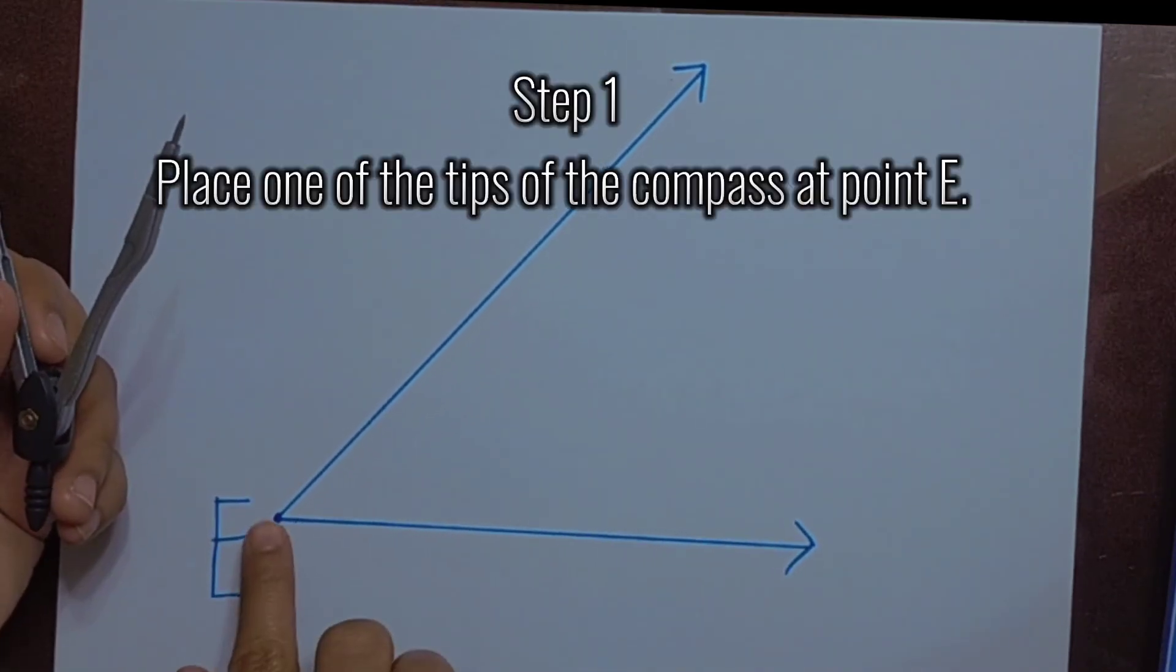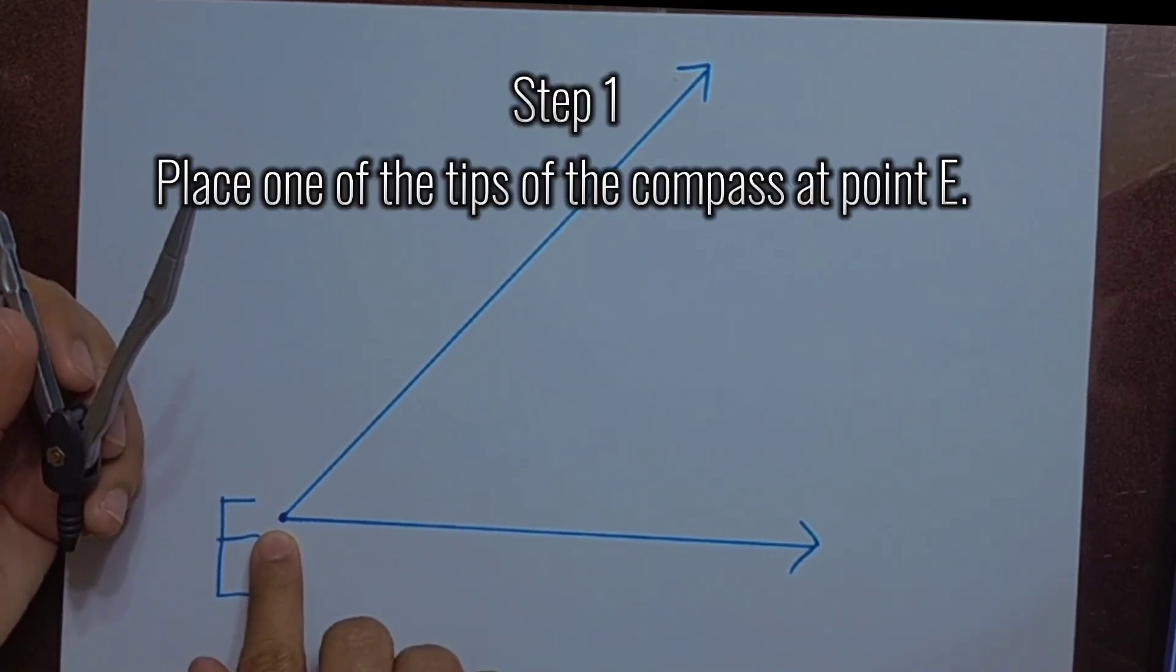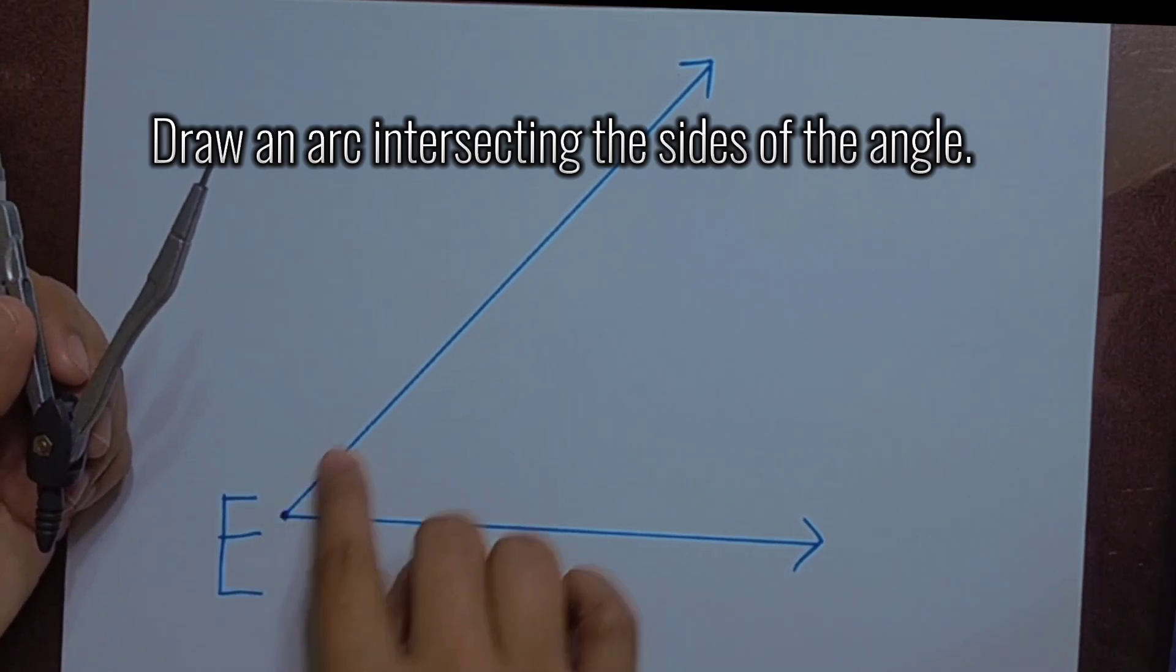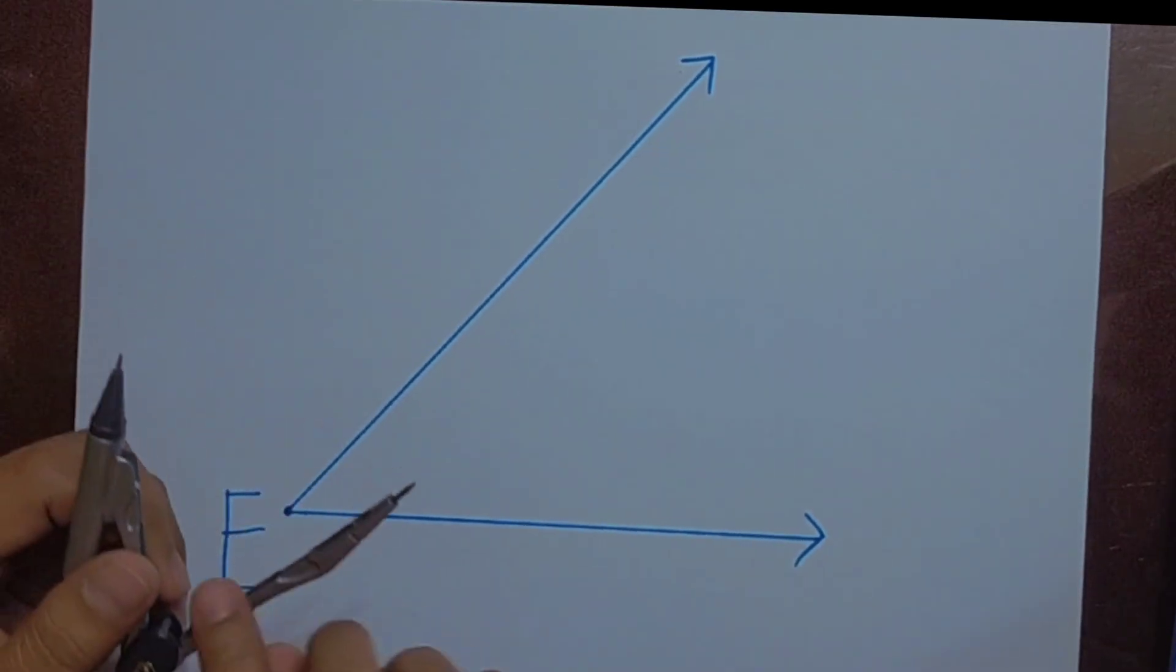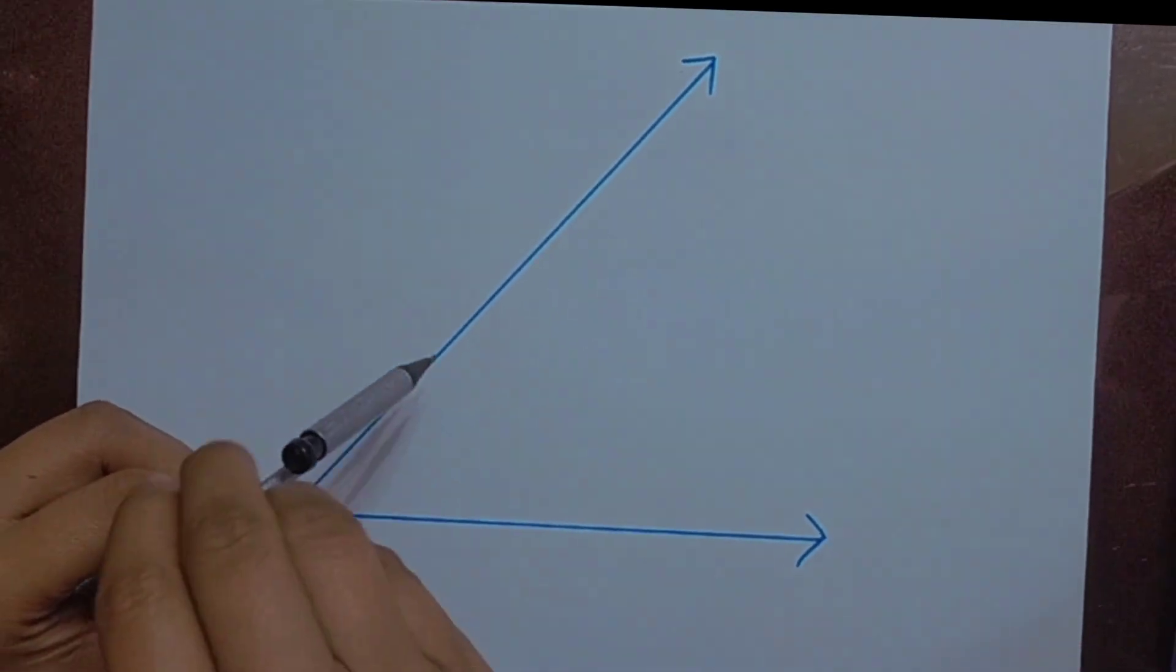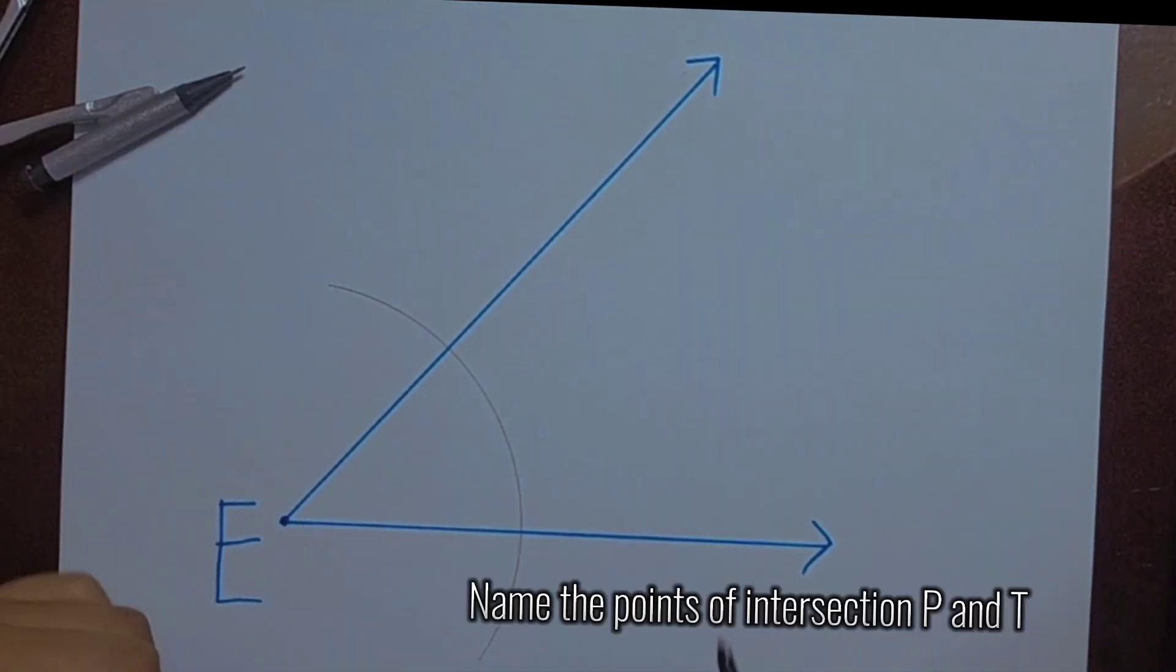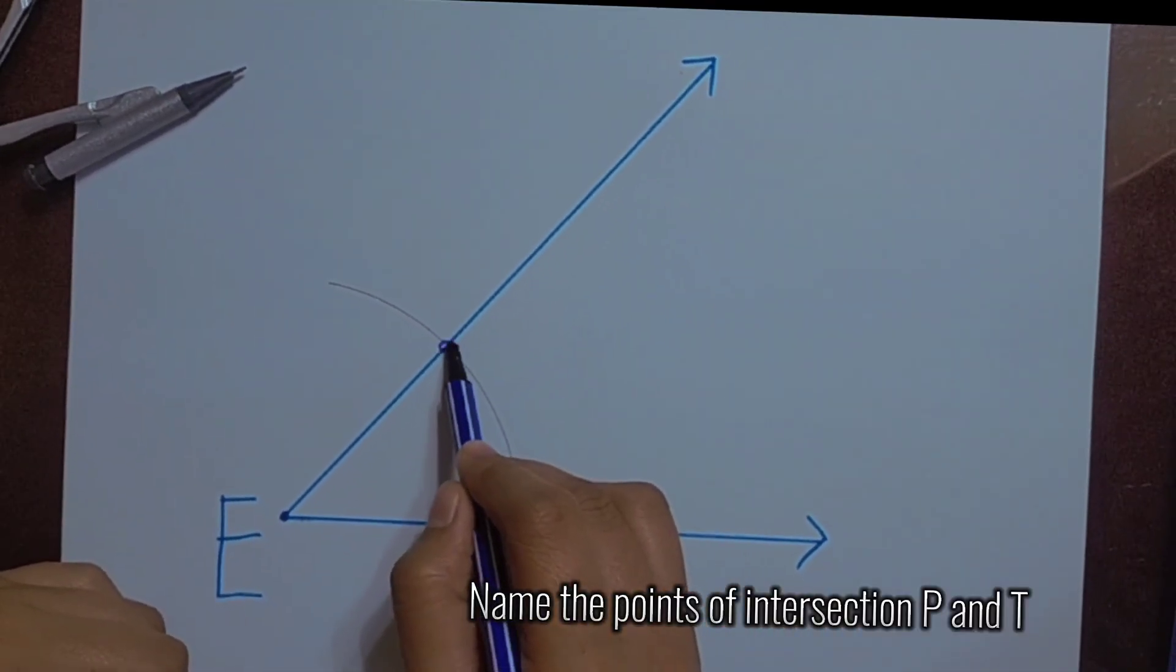Step 1. Place one of the tips of the compass at point E. Draw an arc intersecting the sides of the angle. Name the points of intersection P and T.